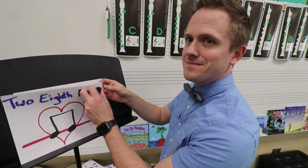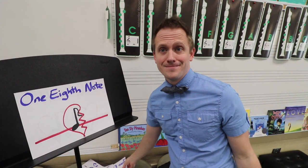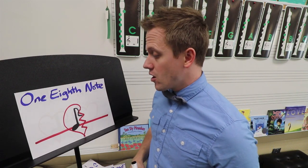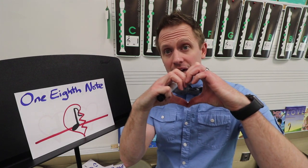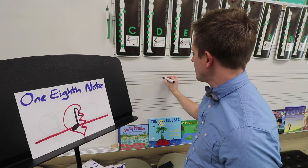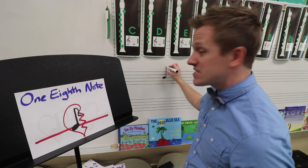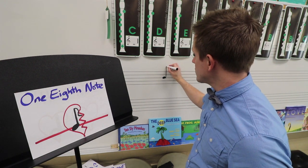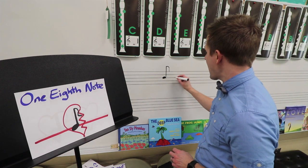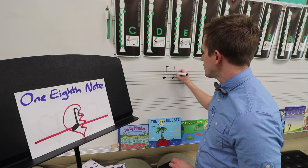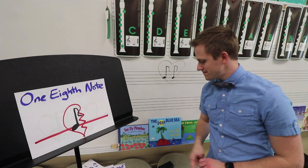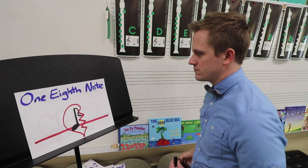Up next, one eighth note. The thing about one eighth note is it only fills in half of a beat. If you had two eighth notes inside of a full beat, one eighth note would just be half. You're still going to draw your note head on the line or in a space, still put the stem up, still need a bar — but this bar doesn't connect to anything, so it's just like a tail that hangs down. That's because eighth notes only get half of a beat.